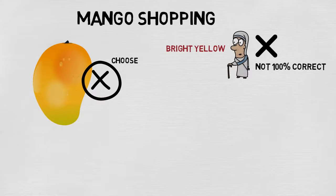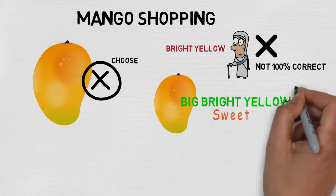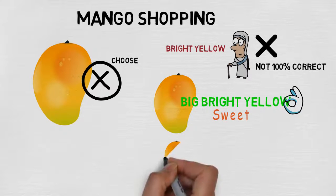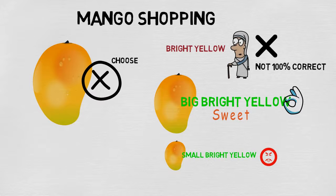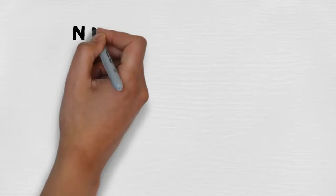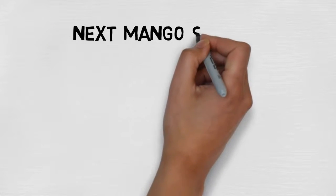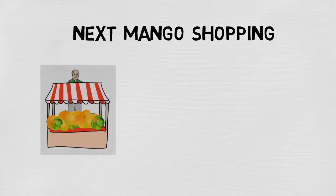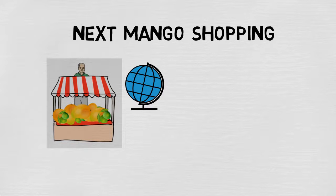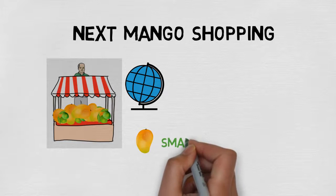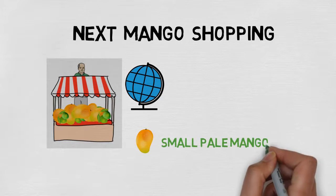After tasting a lot of mangoes, you find out that big bright yellow mangoes are sweet, but small bright yellow mangoes are not necessarily sweet. So you create another rule to choose the mango. Next time you go shopping, you know the rule, but the vendor you bought from before is not available. So you buy mangoes from another vendor who supplies from another country, and you find that in this case small pale mangoes are sweet. So the rule changes again.